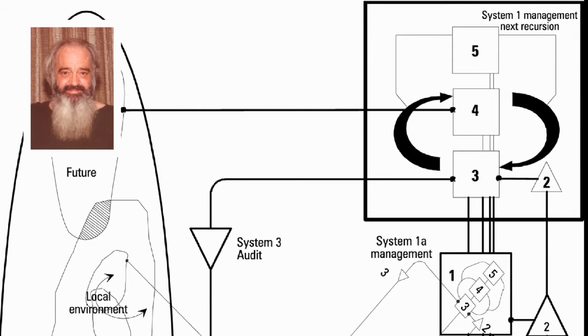How do you define participatory democracy and how does it fit into a viable system? It's a complicated question. I mentioned earlier that the model looks hierarchic because it's stretched over a flat piece of paper. You can't get away from that. It is not hierarchic.